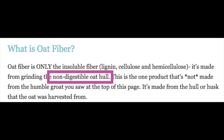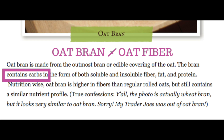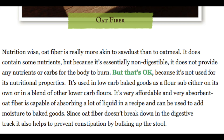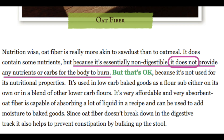Oat fiber is not ground up oats — it's not oat flour. When you have an oat grain, the outer covering is the part taken off and ground down into oat fiber. Oat bran is the next layer underneath the oat hull and is high in carbs as well as nutrients — it is not oat fiber, so be careful not to get them mixed up when buying. Oat fiber is essentially a non-digestible fiber. It does contain carbs technically because fiber is included as a type of carb on nutrition labels. The same goes for most of coconut flour's carbs — they are also a form of fiber.